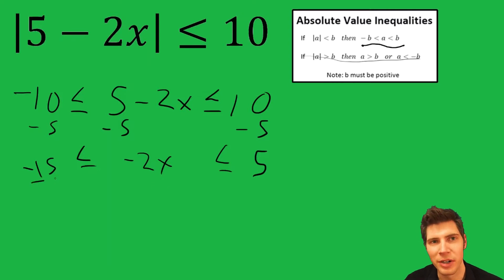Now we divide by negative 2. Negative 15 divided by negative 2 is positive, say 7.5. Negative 2 and negative 2 cancel, so we're left with just X. And 5 over negative 2 is negative 2.5. Then since we divided by a negative number, we need to change the direction of the signs.